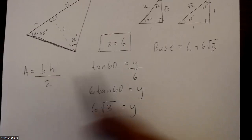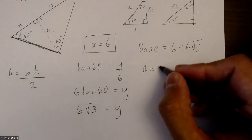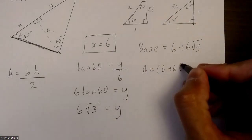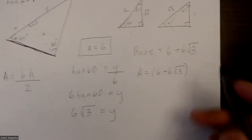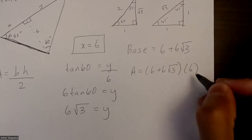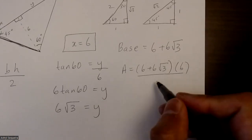Which means that my area is just my base, which is 6 plus 6√3, times my height, which is 6 in this case, divided by 2.